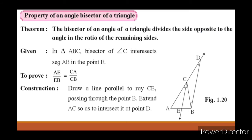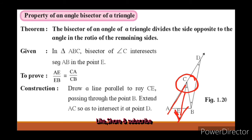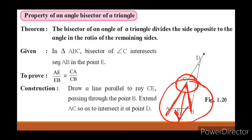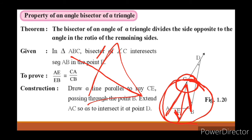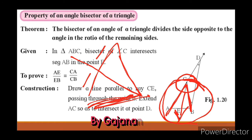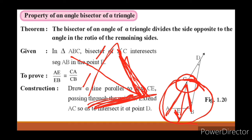It divides the opposite side in the ratio of the two remaining sides. This is the theorem — this is the angle bisector theorem of triangles.